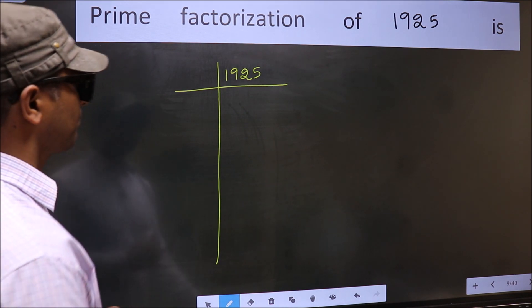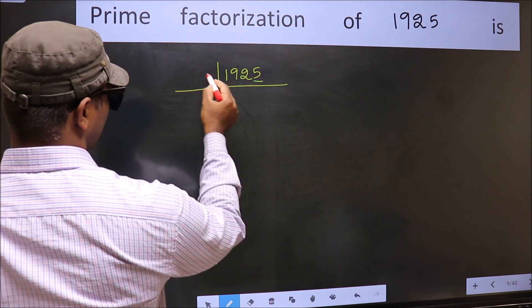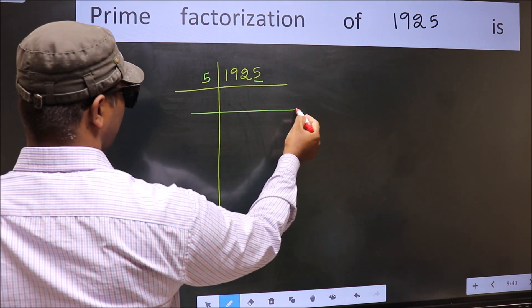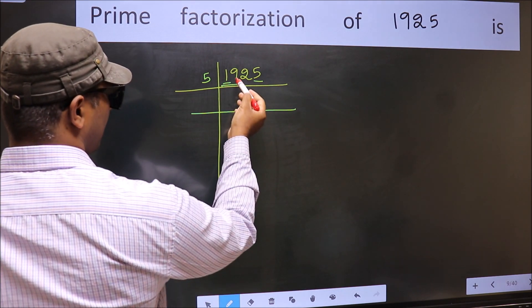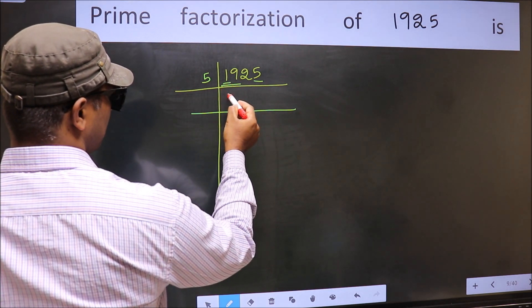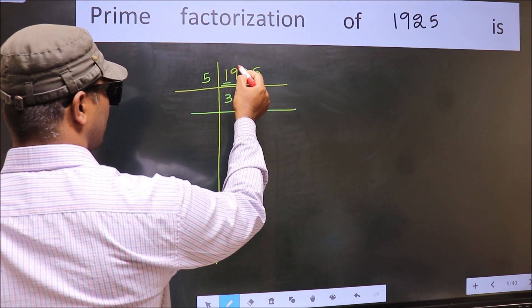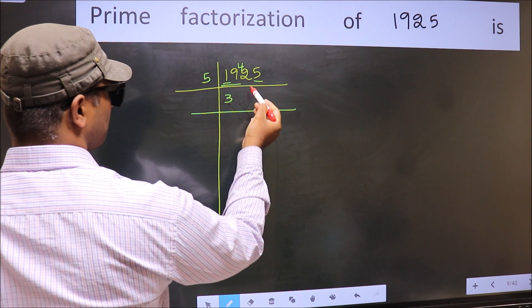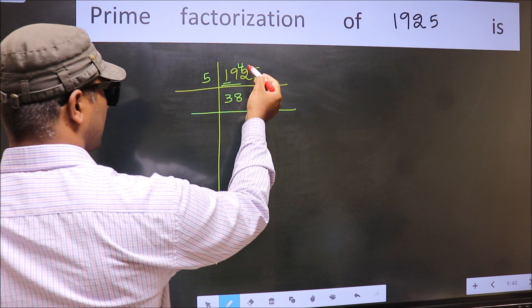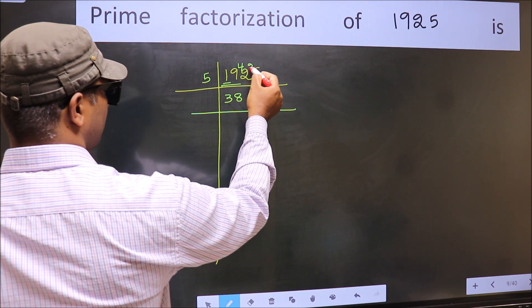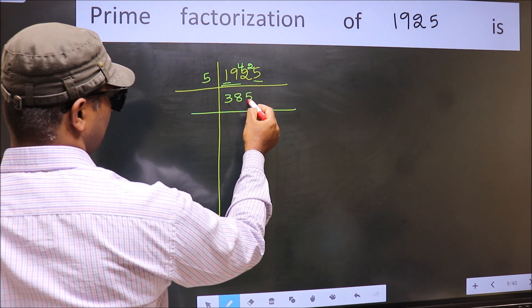Next, in this number, last digit 5, so take 5. First number 1, smaller than 5, so take 2 numbers, 19. A number close to 19 in 5 table is 5, 3 is 15. 19 minus 15, 4, 4 carried forward 42. A number close to 42 in 5 table is 5, 8 is 40. 42 minus 40, 2, 2 carried forward 25. When do we get 25 in 5 table? 5, 5 is 25.